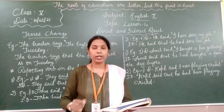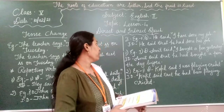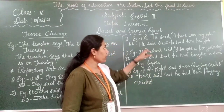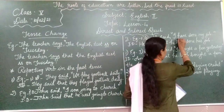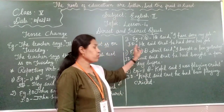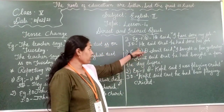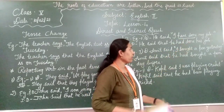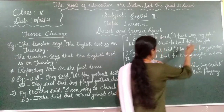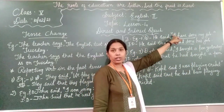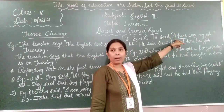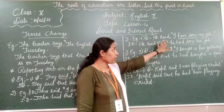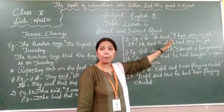Next: present perfect becomes past perfect. See the example: He said, 'I have done my job.' 'I have done' is present perfect tense. In indirect speech, it changes to past perfect: he said that he had done his job. 'Have' became 'had.' Present perfect changes to past perfect.